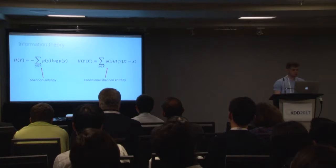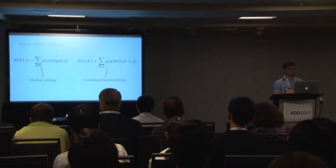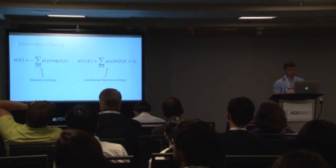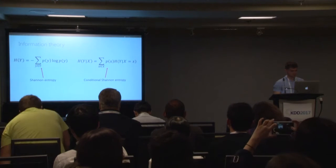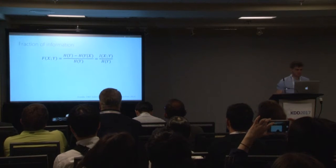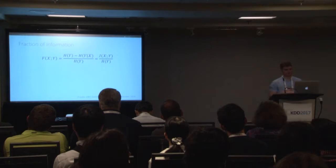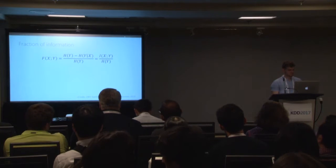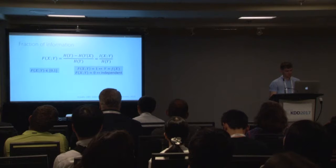Of course, we will use information theory. On the left we have Shannon entropy, which measures the information content of a variable. On the right we have the conditional Shannon entropy, measuring the information content of a variable having observed X. We combine these as the fraction information, whose numerator is known as mutual information. This score is well known in the literature, lies in [0,1], and the extreme cases of 0 and 1 correspond to independence and functional dependency.